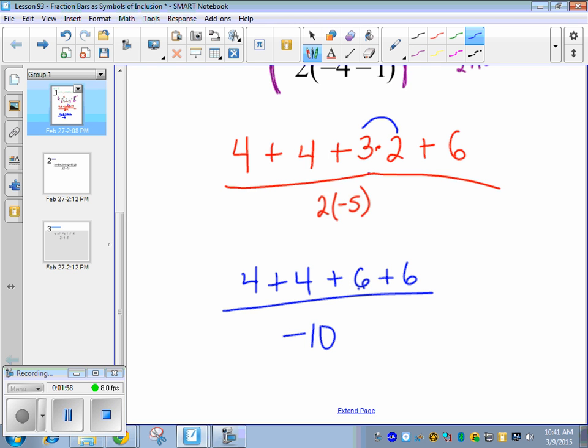Again, we cannot divide until the very end. So we're still working on the top and adding everything in the top. So Mark, what does all that in the top add to? We get 20. And then the very last thing we do is divide. 20 divided by negative ten. Zach, what's that? Negative two. Good.